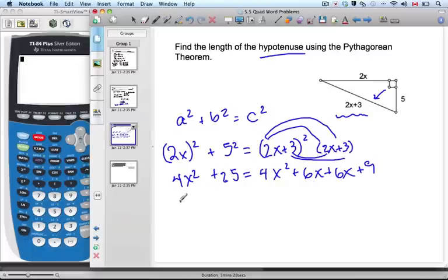Now let's simplify a little bit. 4x² + 25 equals 4x² + 12x + 9. Now what? Now, oh it's a plus 9, thank you. That's why it's good to do it together.